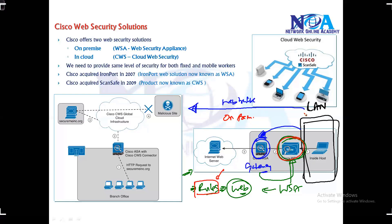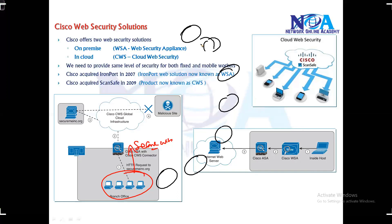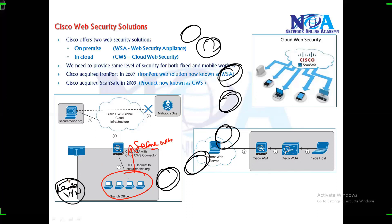Nowadays we have remote users and branch offices. You may want a branch office to also be secured — meaning whatever traffic goes to the internet should have web security applied. But if you have multiple branch offices, implementing a WSA for each and every branch is not going to be scalable. Similarly, remote users or VPN users accessing from different locations are not covered by the on-premises WSA.